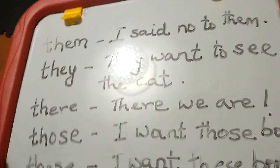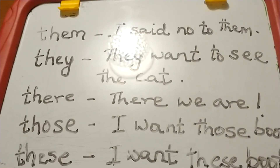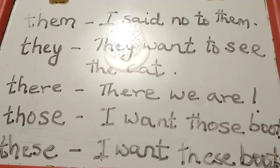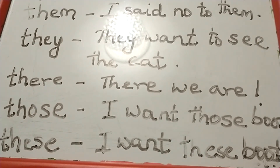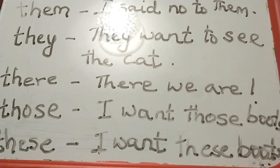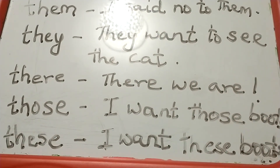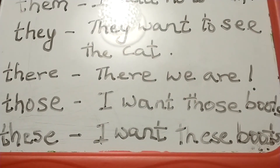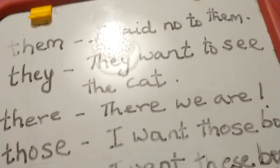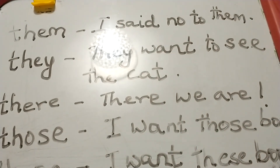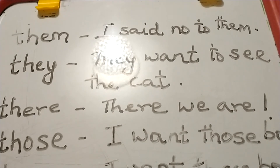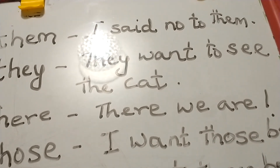Let's look at them all together: THAN — 'I said no to them.' THEY — 'They want to see the cats.' THERE — 'There we are!' THOSE — 'I want those boots.' Children, if you like this video, and parents, if you like these videos, please do like, share, and subscribe to our channel. Thank you for watching. I hope you like learning the sight words — this is a very easy way to help children learn to read. Thank you for watching, bye bye!